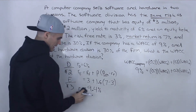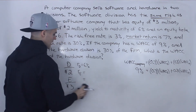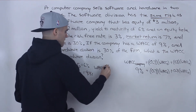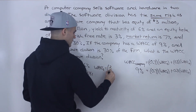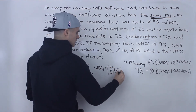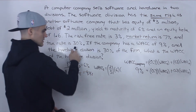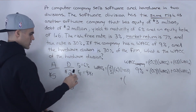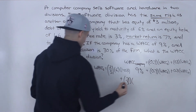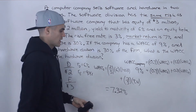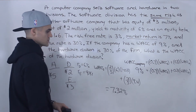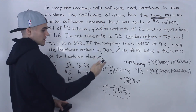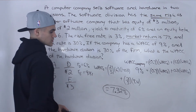Now we have enough information to calculate the WACC of the comparable software company. WACC_software = (2/5) × 6% × (1 − 0.3) + (3/5) × 9.4%. That gives us 7.32%. Since the software company has the same risk as the software division of the computer company, the software division has a WACC of 7.32%.